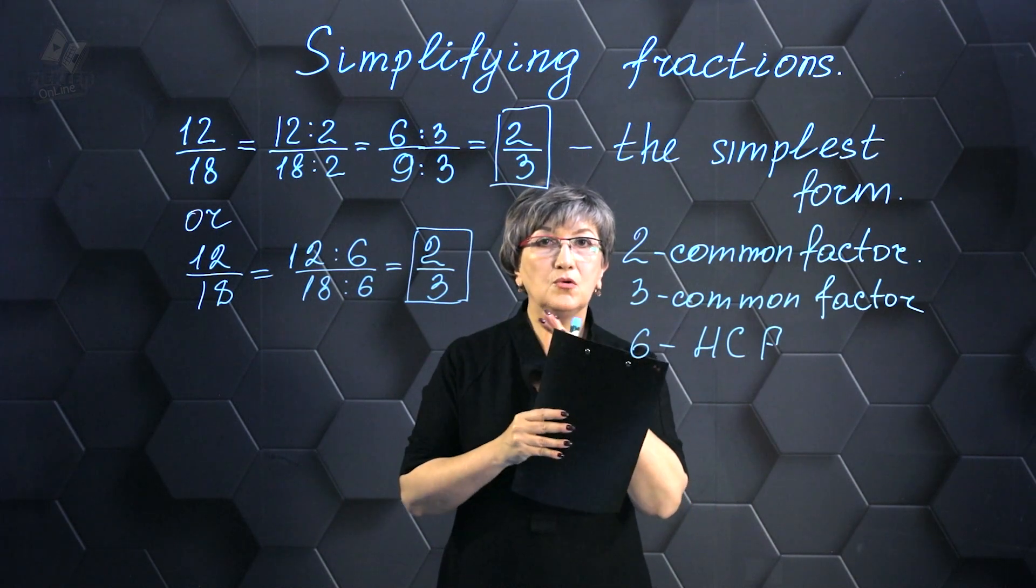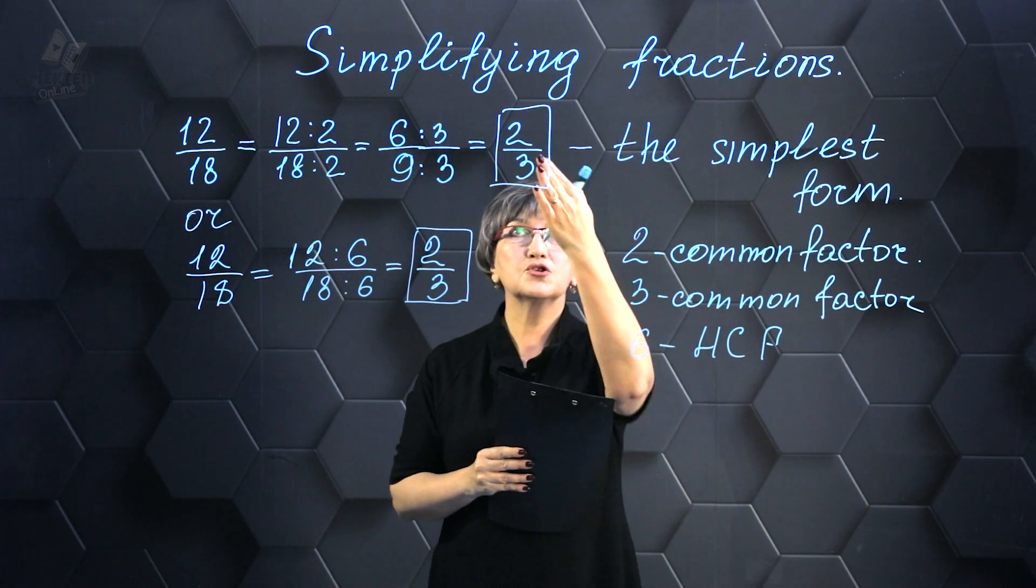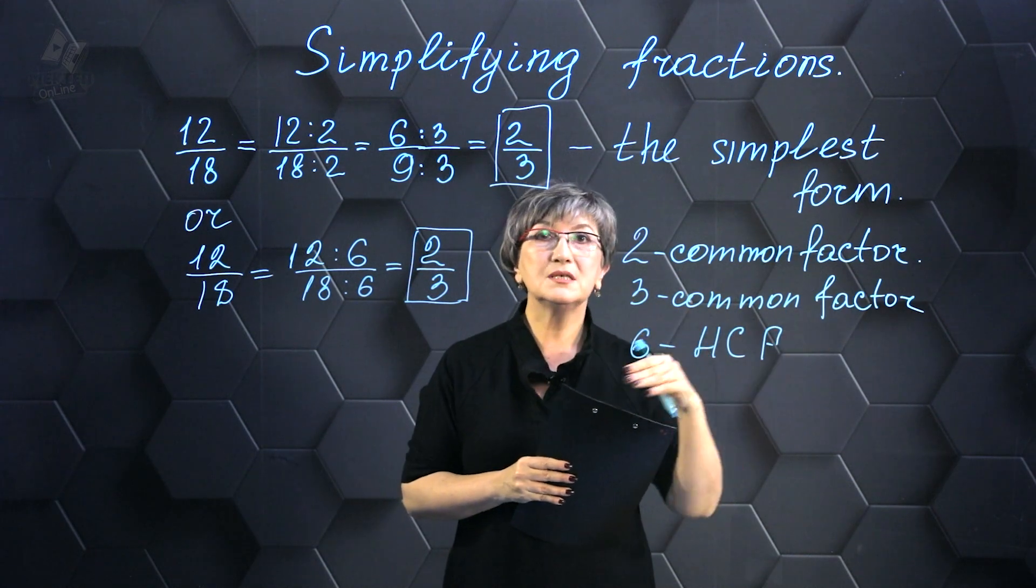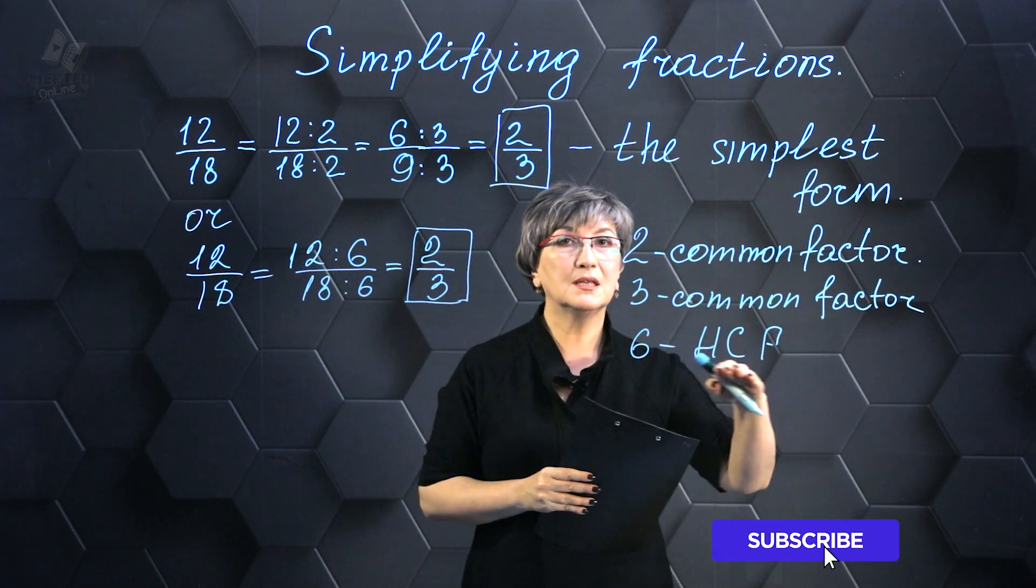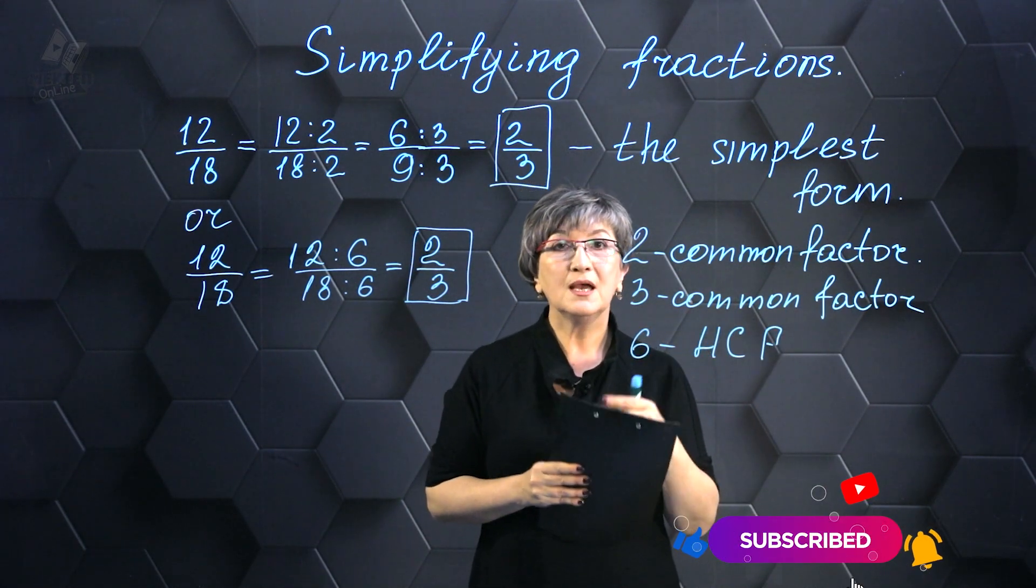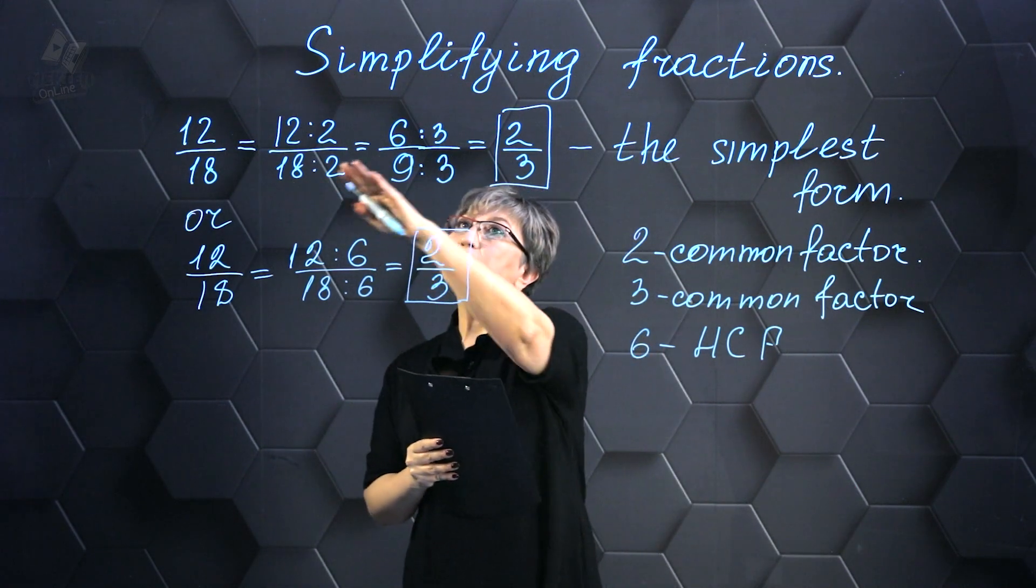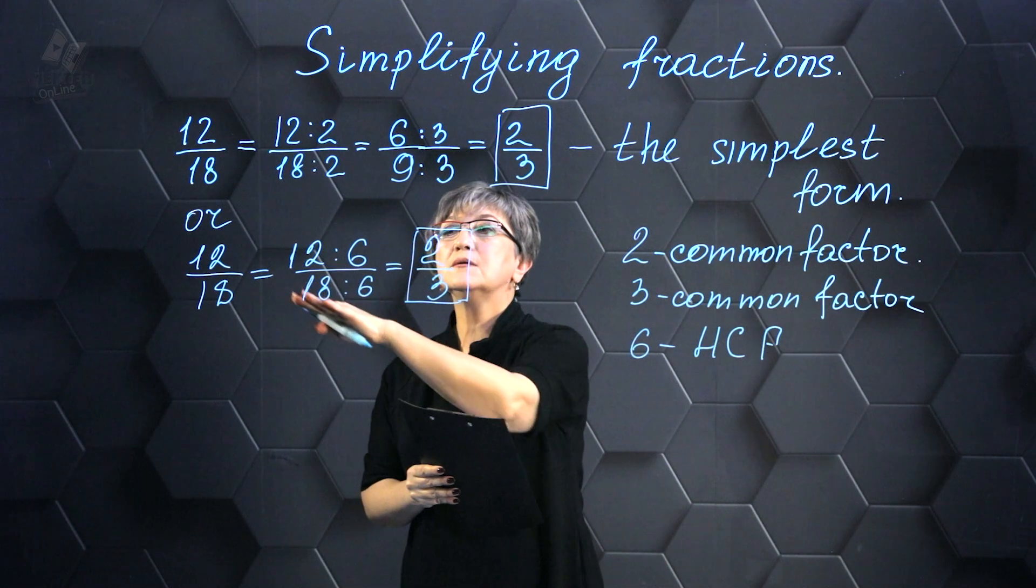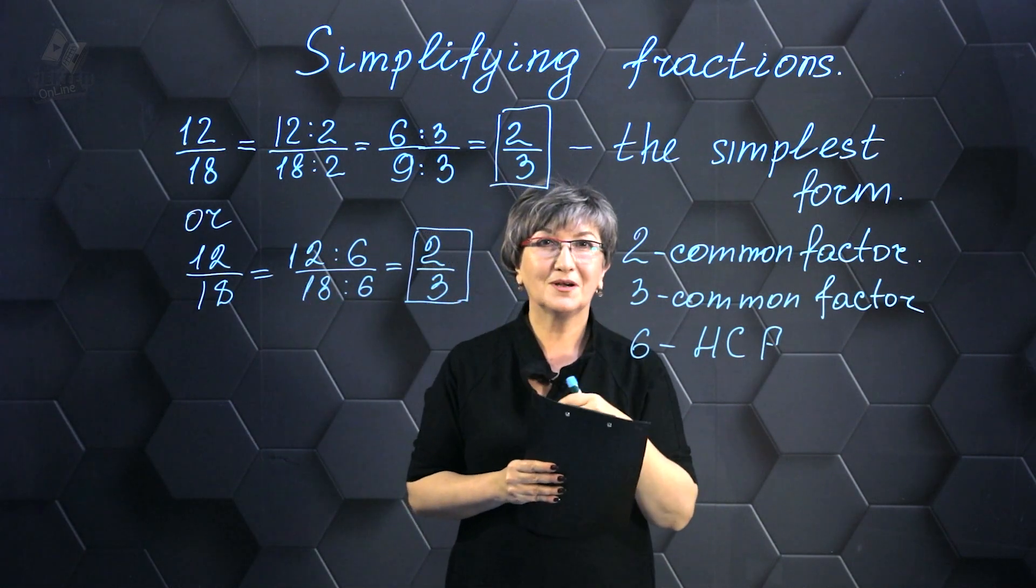So, you can choose any path to simplify this fraction. Either divide by common divisor or immediately divide by the greatest common divisor. The only difference is that here you perform one action and then another action. In this case, you perform only one action.